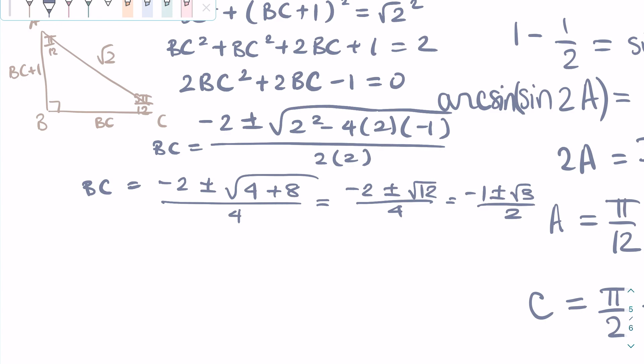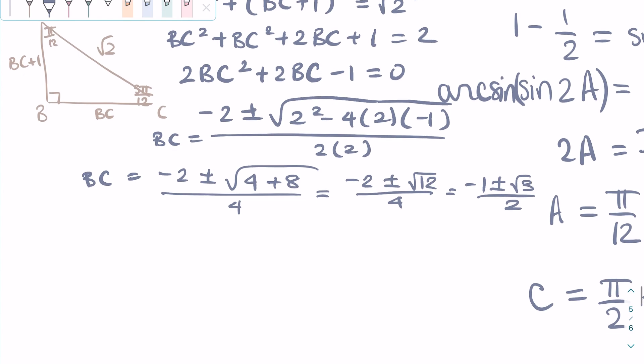How do we know which one to use? Well, we know that the length of a side of a triangle cannot be negative, so we obviously have to use the plus sign in the expression. So, we have square root of 3 minus 1 over 2 is BC.